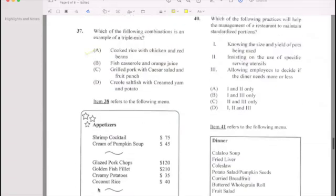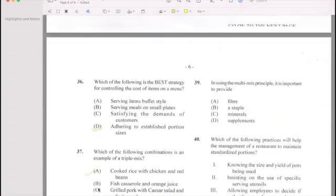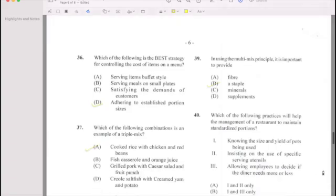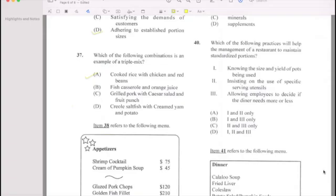39: In using a multi-mix principle, it is important to provide a staple. 39 is B. Which of the following practices will help management of a restaurant to maintain standardized portions? They give us some options: knowing the size and yield of the pot, insisting on the use of specific serving utensil, allowing employees to decide if the diner needs more. If your answer is A, then you are correct.